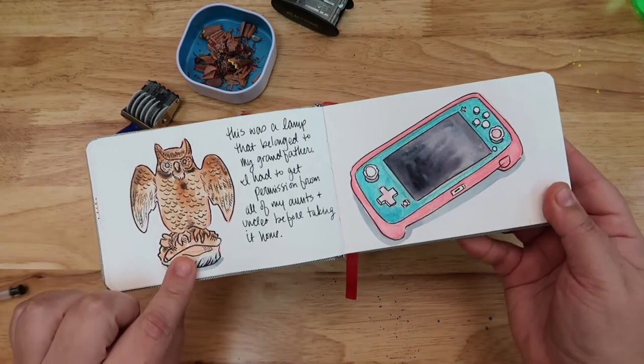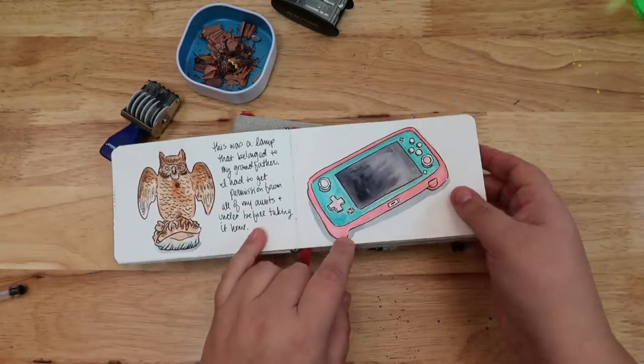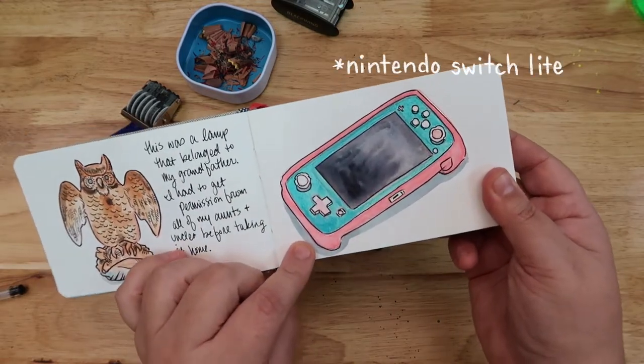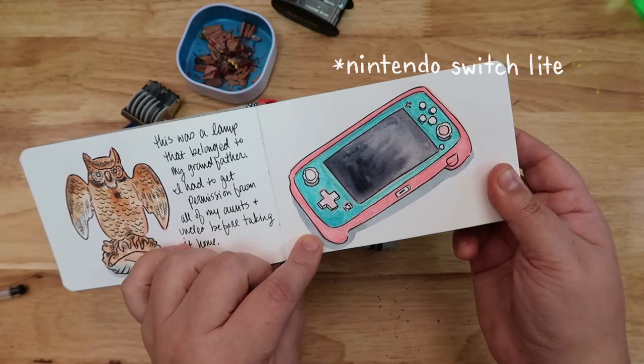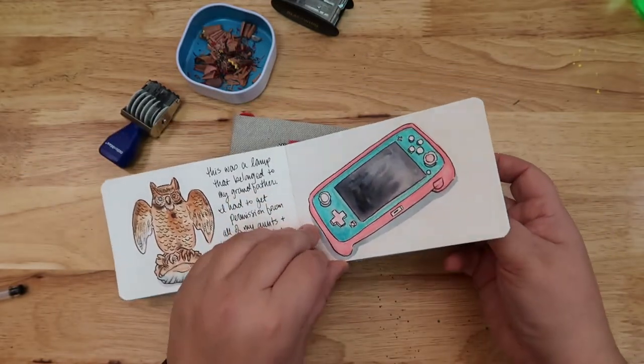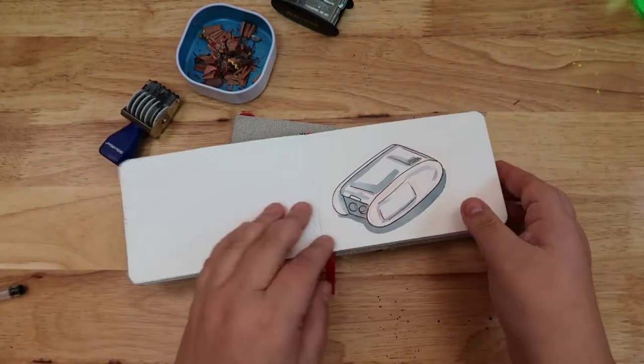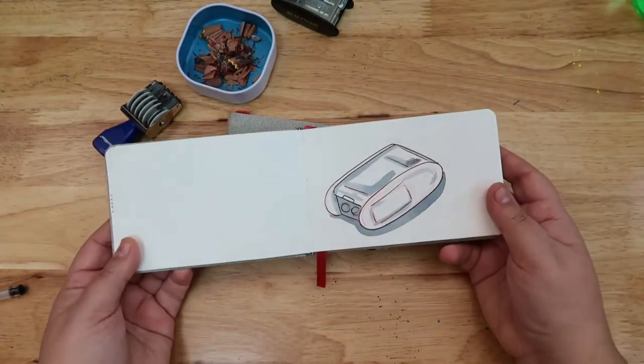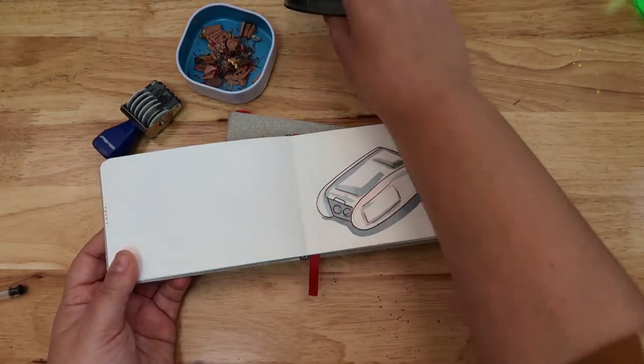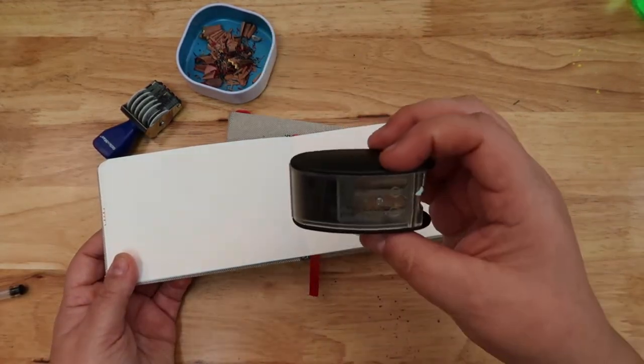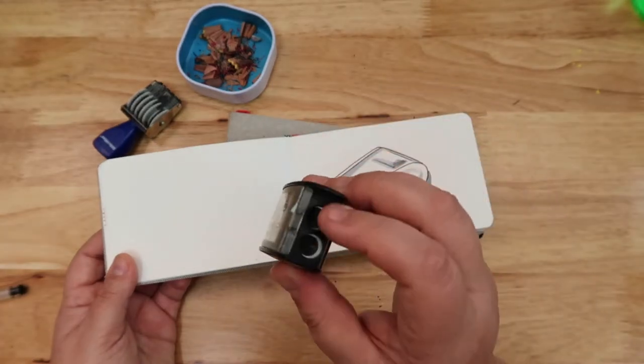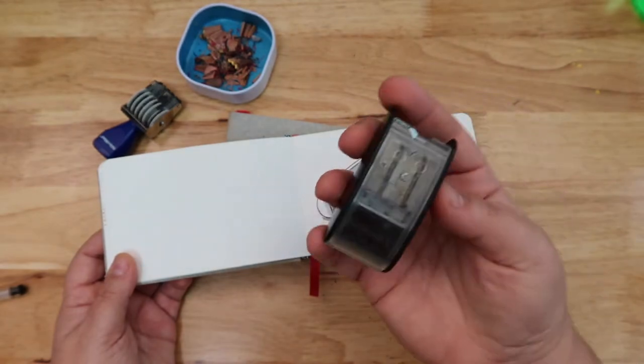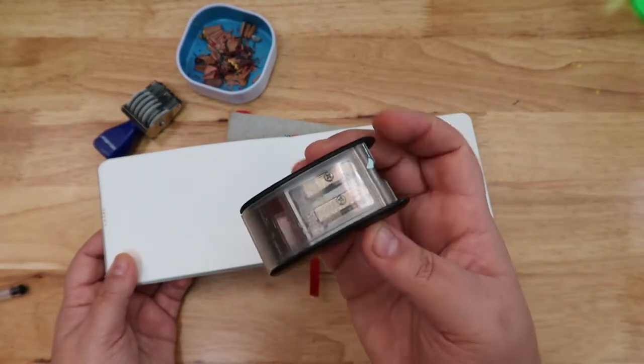This owl statue once belonged to my grandfather. One of the best gifts I've ever gotten is my little Nintendo Switch—I pretty much play Animal Crossing all the time. Then, as you can see, lost interest, moved on. This is one of my favorite pencil sharpeners—it's a Kum automatic long point.